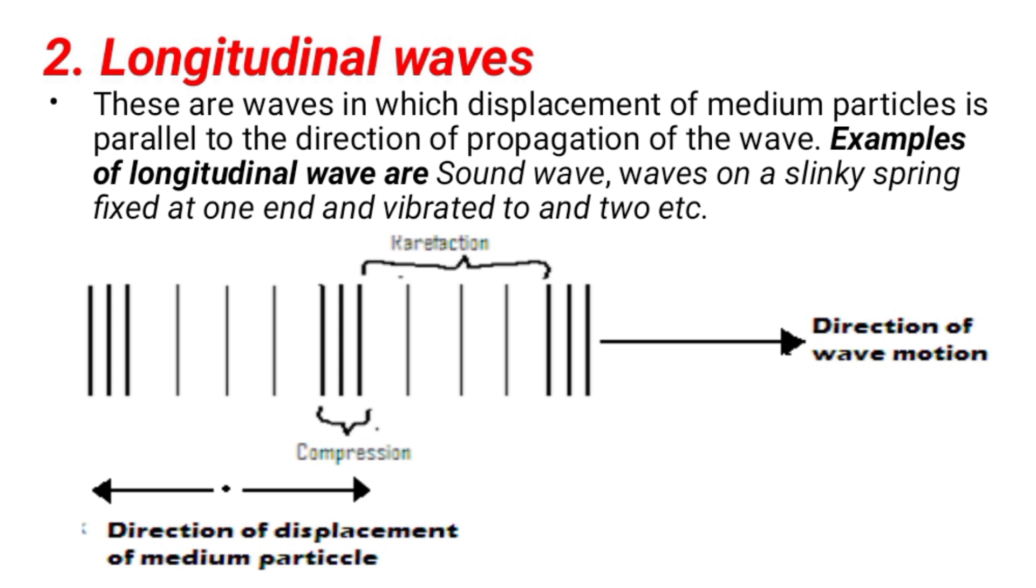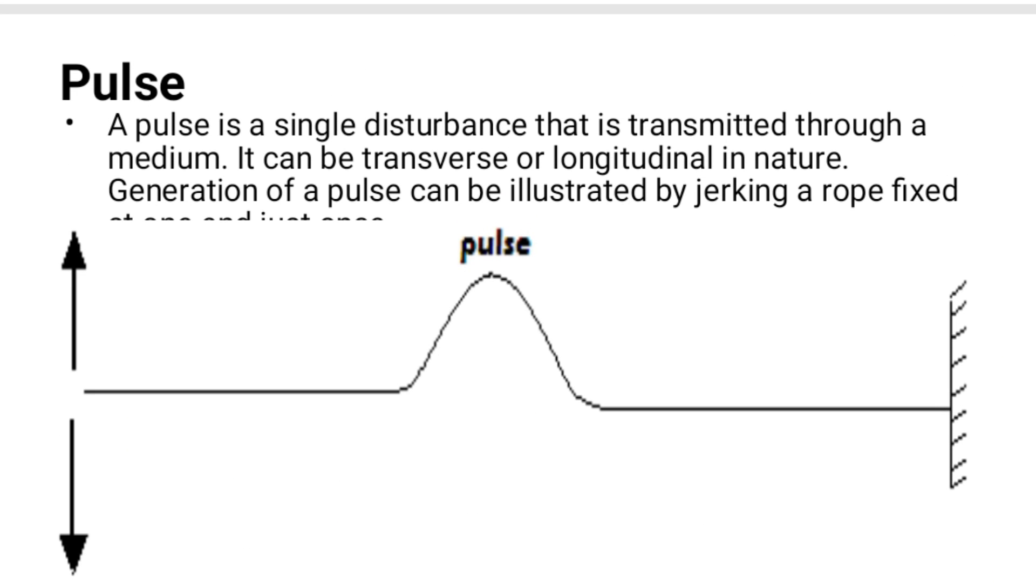What is a pulse? It is a single disturbance that is transmitted through a medium. It can be transverse or longitudinal in nature. What we can see there with only a crest or a trough is a pulse.